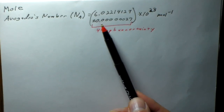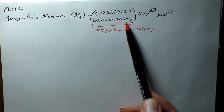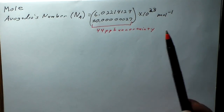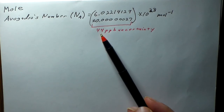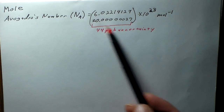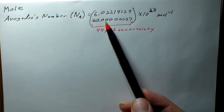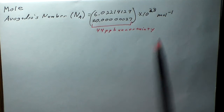That 0.000027 uncertainty works out to be about 44 parts per billion — this is how well-known Avogadro's number actually is.